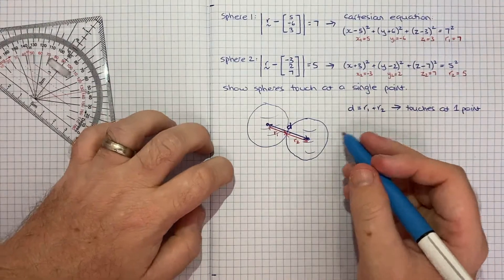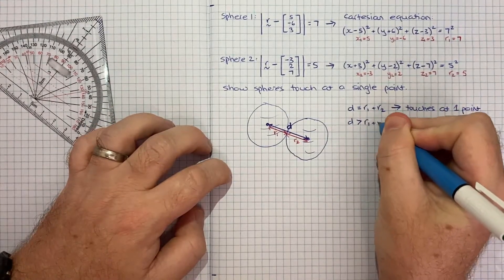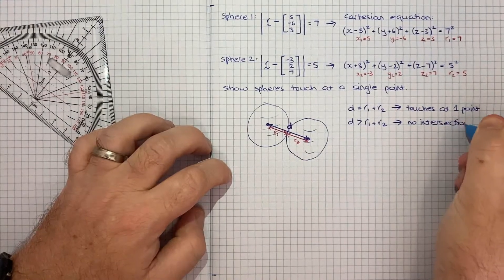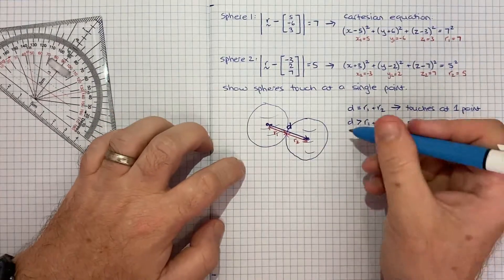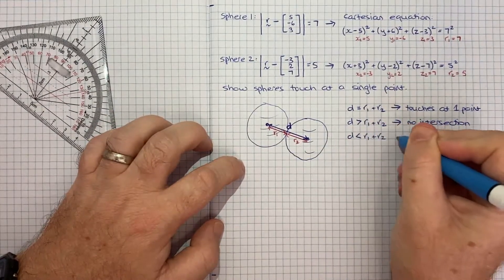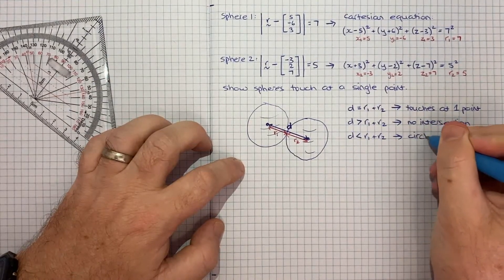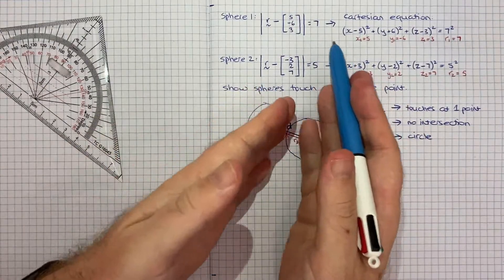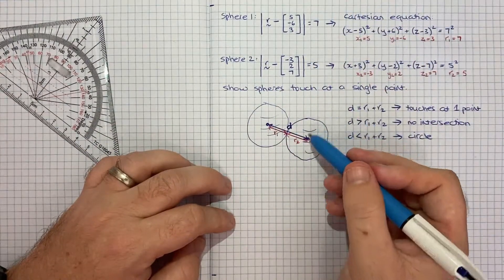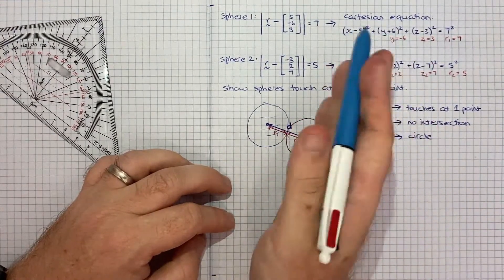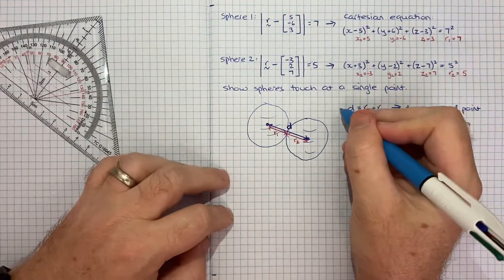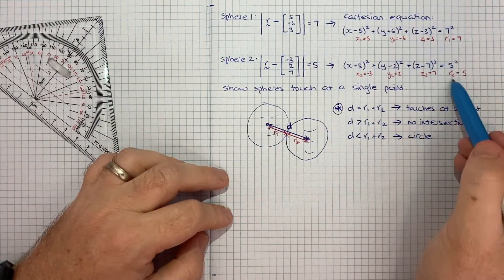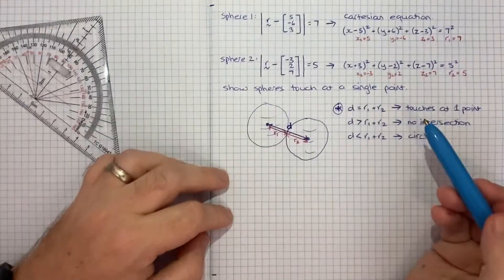If d was greater than r₁ + r₂, then we would have no intersection because the spheres would be too far away for any overlap. If d is less than r₁ + r₂, we get basically a circle as the plane of intersection. When the two spheres overlap and you slice down the middle, you'll see a circle. But we're mainly concerned with the first result.